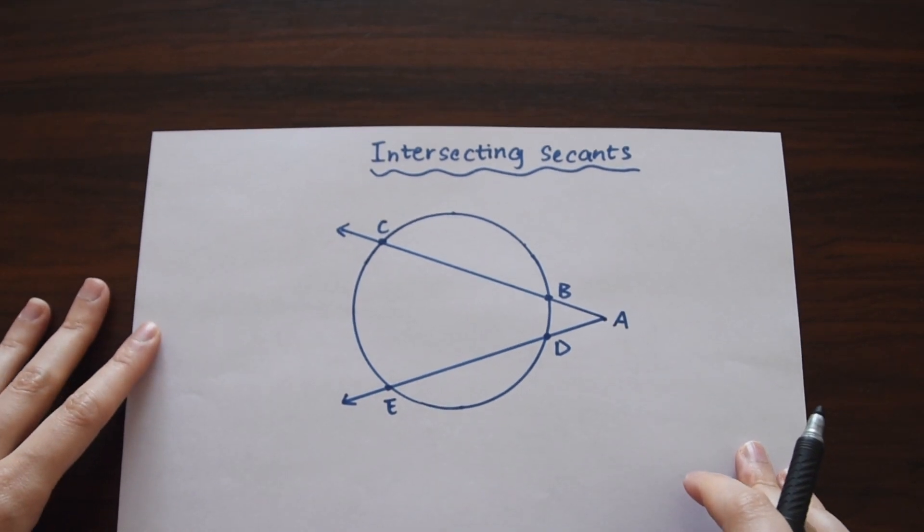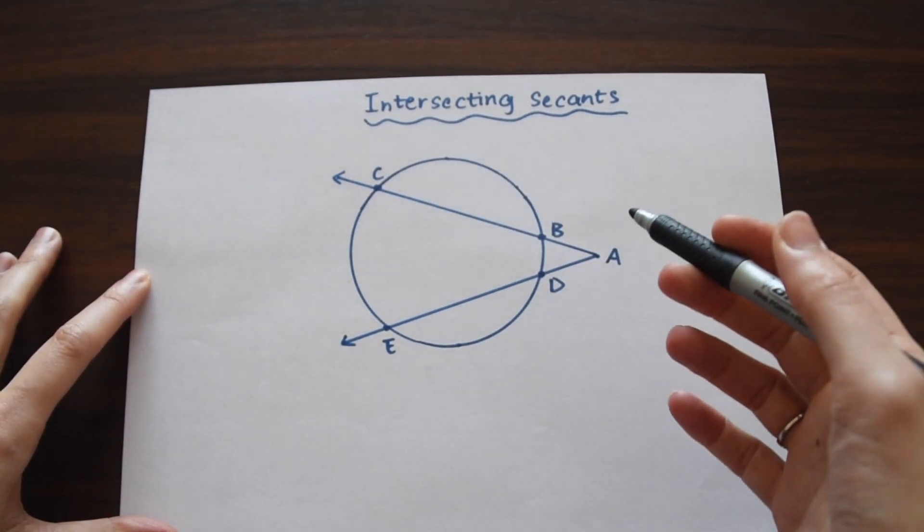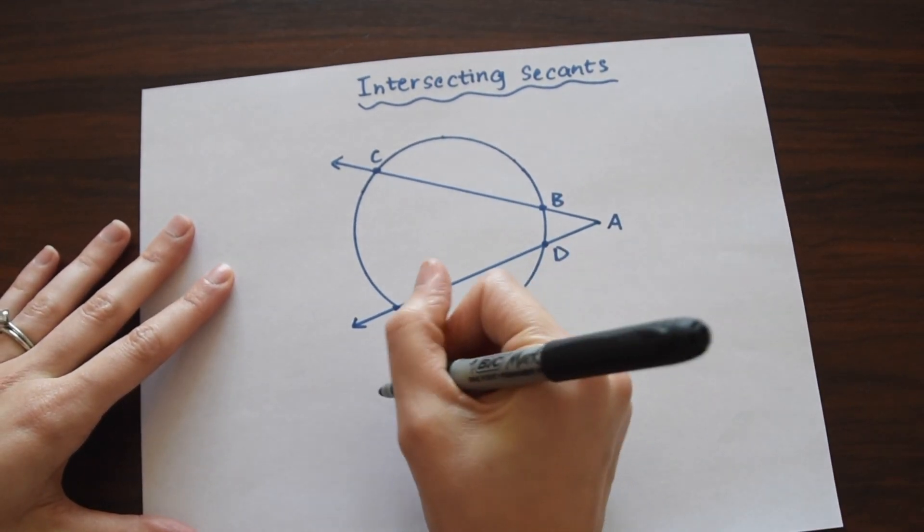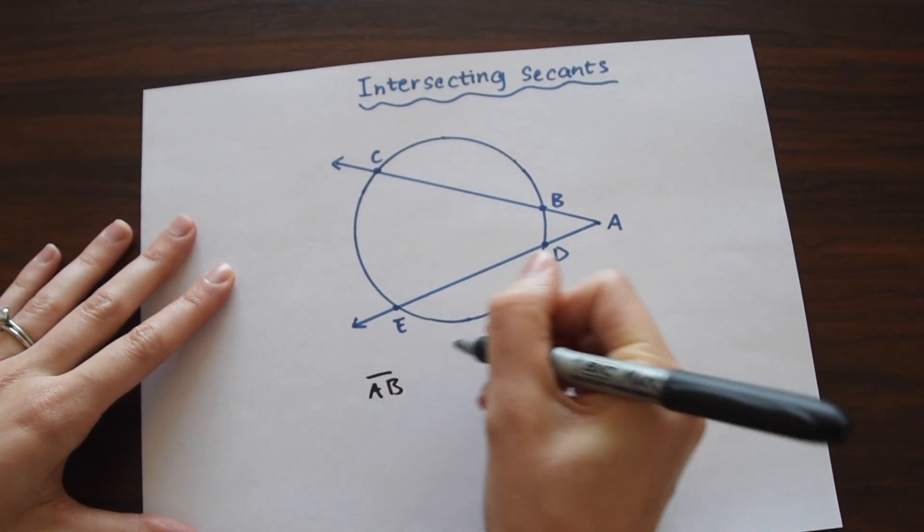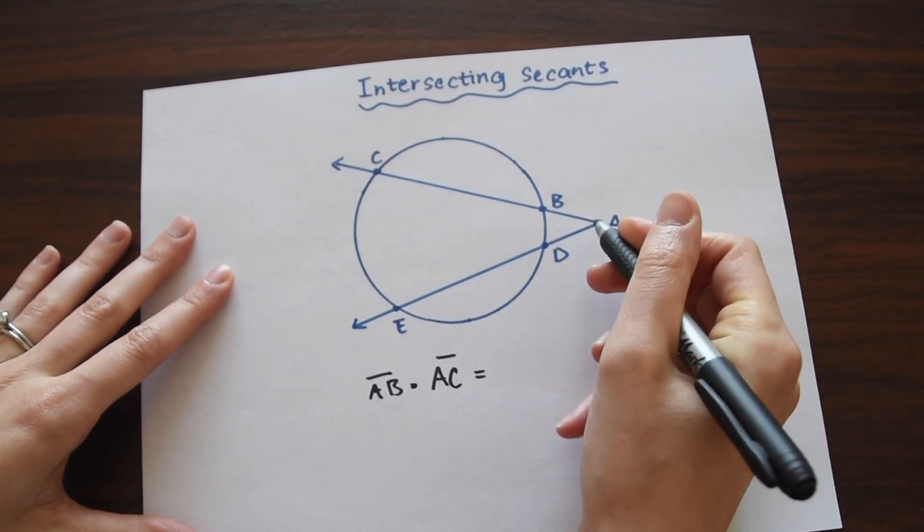But when we have intersecting secants, there's actually a really nice theorem we can use to find any missing length. So the theorem states that AB times AC is equal to AD times AE.